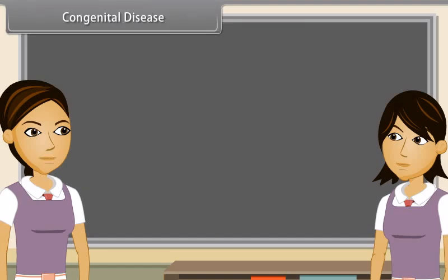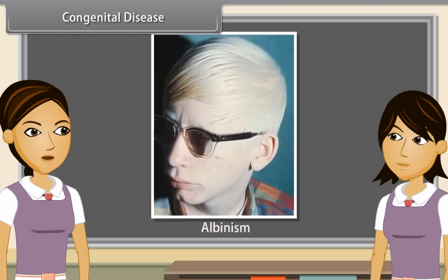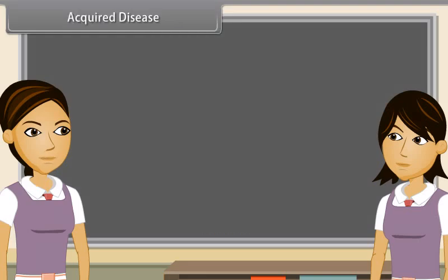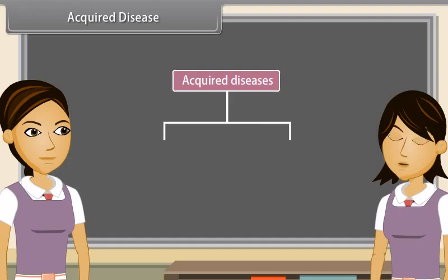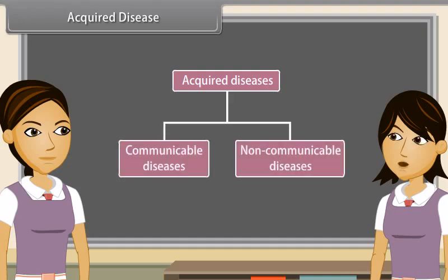Congenital diseases are those which are present since birth — for example, albinism, hemophilia. Acquired diseases occur only after birth and hence they are non-inherited. Acquired diseases are of two types: communicable diseases and non-communicable diseases.